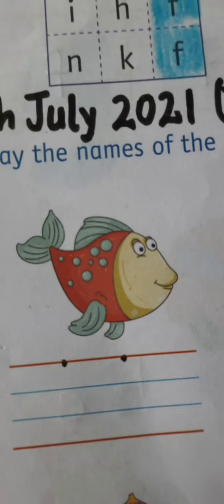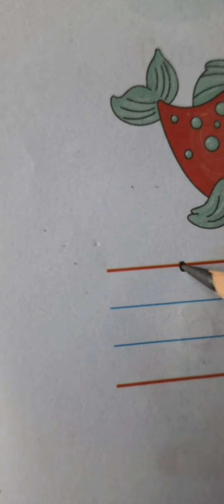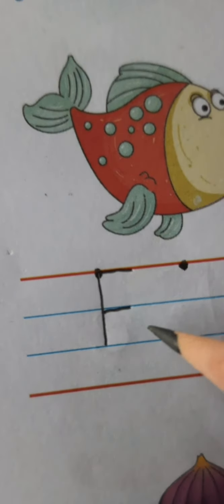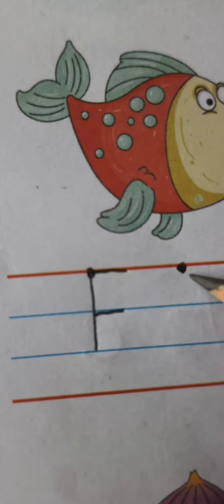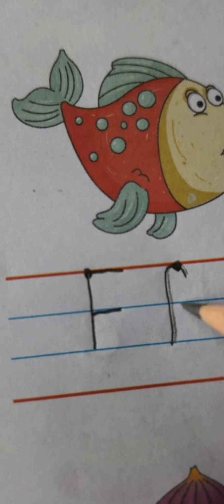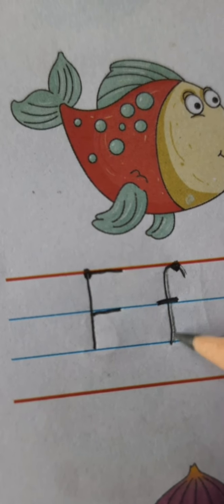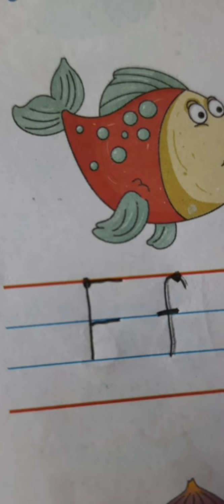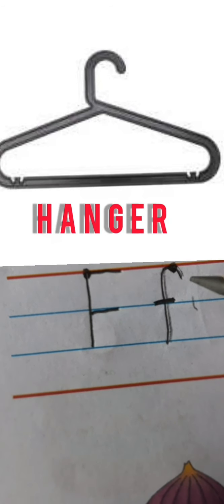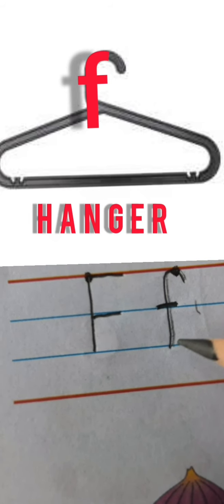So let's try to write capital F and small f. So let's start. For capital F children we have to make one standing line from red line to second blue line and make one standing line and two sleeping lines. So this is the formation of capital F. And for small f children we have to start from here. Make a small curve and a standing line and a small sleeping line. This is the formation of small f.